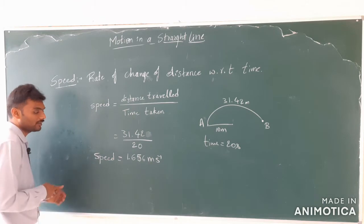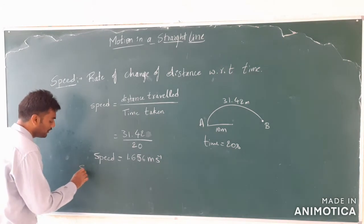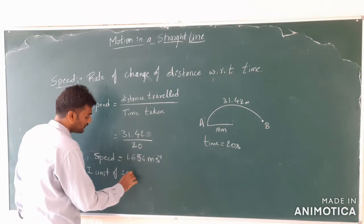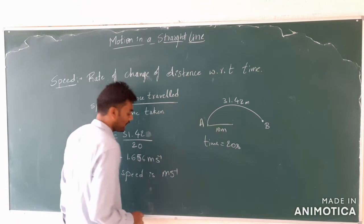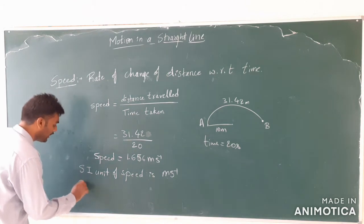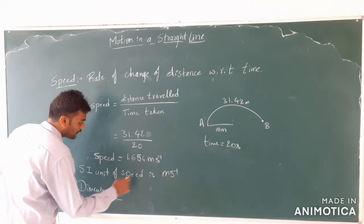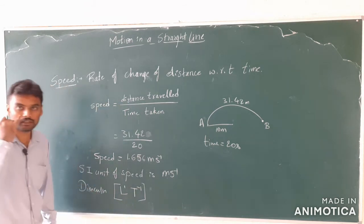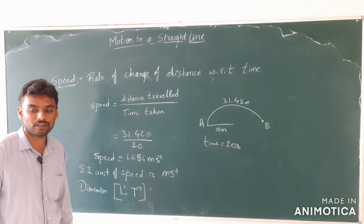Since we have now defined speed, we should also note its SI unit. The SI unit of speed is meter per second. Similarly, the dimensional formula of speed is L¹T⁻¹, because distance is in meters (L¹) and time is in seconds (T⁻¹), so L¹T⁻¹ is the dimension of speed.